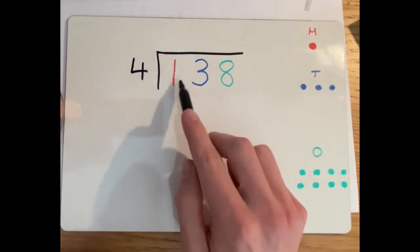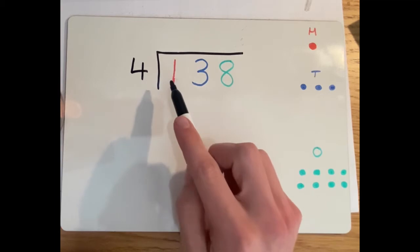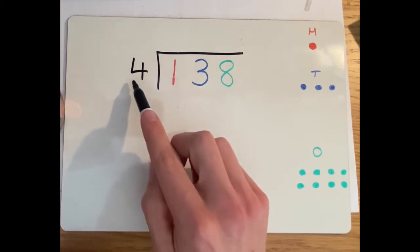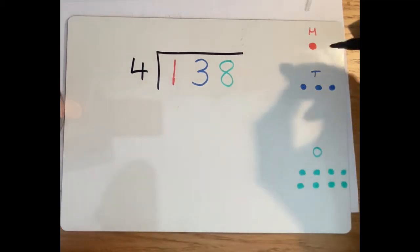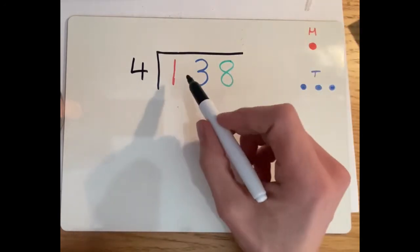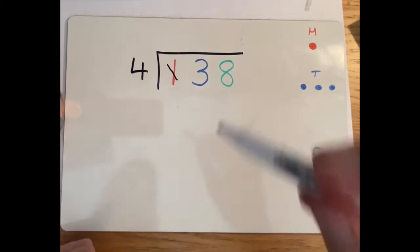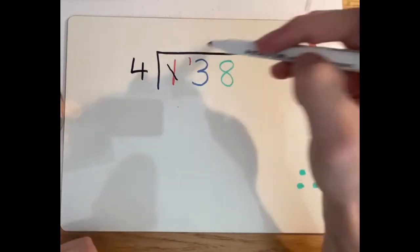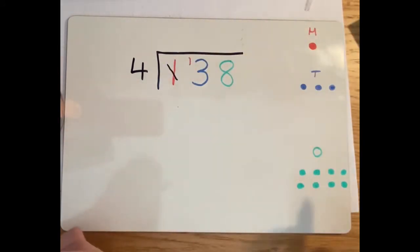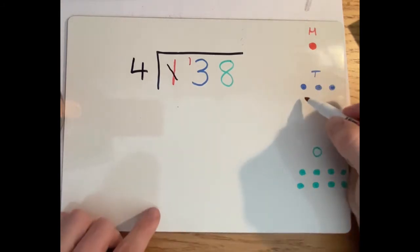Right from the start, we can see we have 100 and we need to divide it by four, which we can't do because we've only got 100. We can't put them into groups of four if we haven't got four to begin with. So we have to exchange that 100 into our tens column and we can draw ourselves 10 more counters here that we've just exchanged.